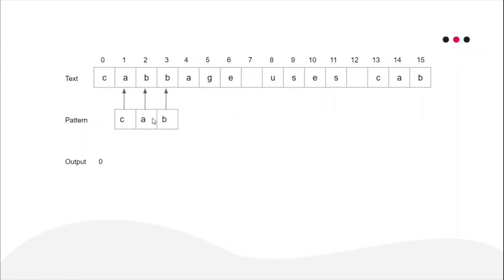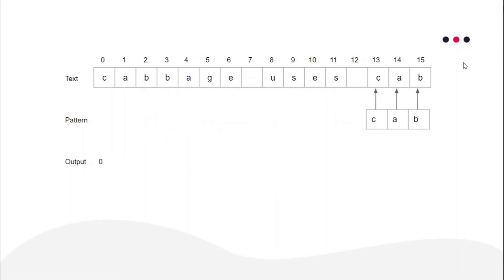Then you move your window one position to the right. Now only the next set of characters of the text are visible. You compare the first character of the visible text to the first character of the pattern, but here 'a' and 'c' do not match, so you do not need to compare the rest and can simply move the window right again. You keep doing this until you reach a point where again the first, second, and third characters all match, and you print the index thirteen.